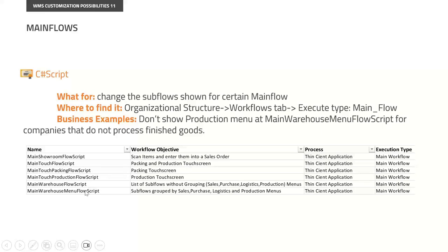And when we select — this is the most typical one — the main warehouse meaning flow, which is the group of actions organized by sales, purchase, logistic, and production meaning.